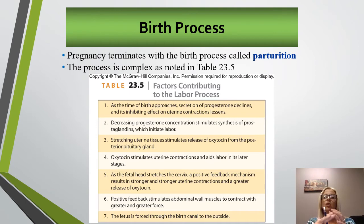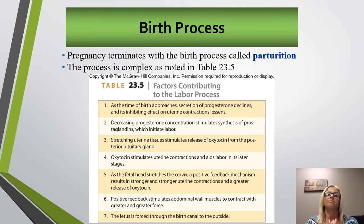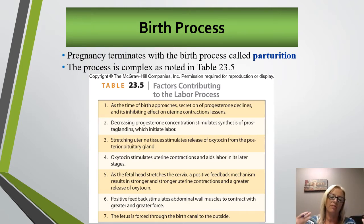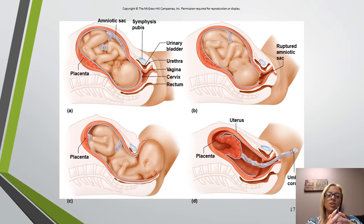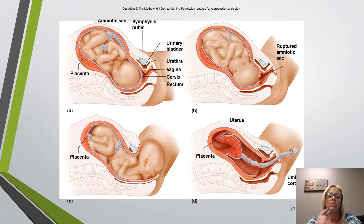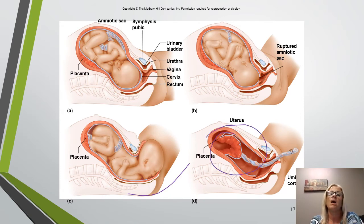The cervix is also going to dilate or open up to 10 centimeters — that's what you really need. The fetus is forced through the birth canal to the outside. In stage A, we have fetal position before labor. In B, dilation of the cervix occurs as the head compresses on the cervix. In C, the fetus is being expelled. And lastly, we have expulsion of the placenta. Oxytocin causes continued contraction of the uterus, which compresses bleeding vessels and minimizes blood loss.